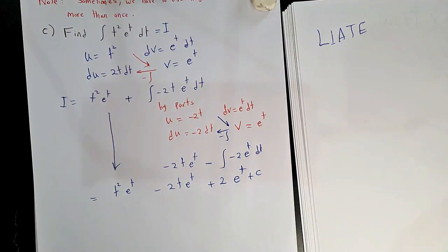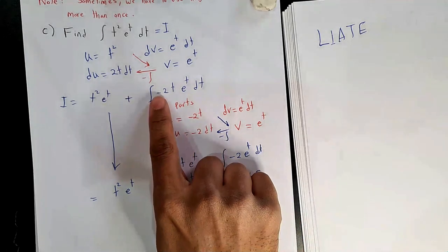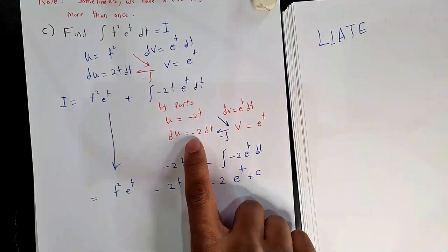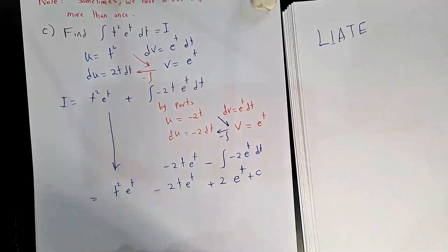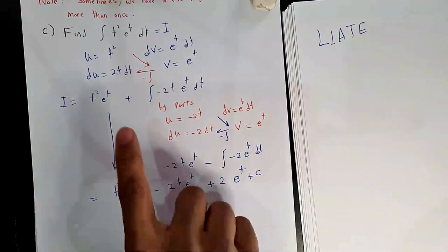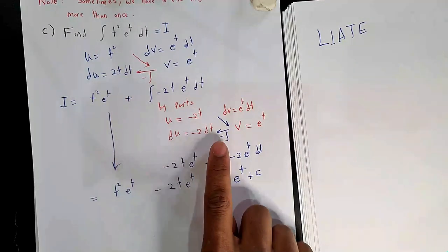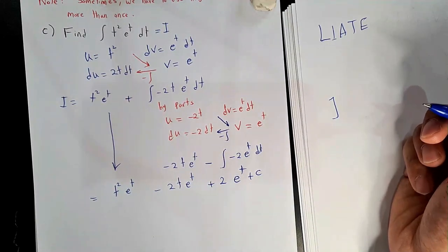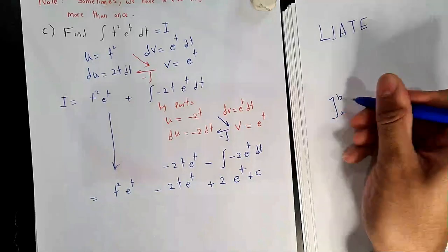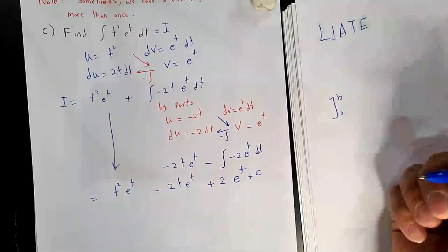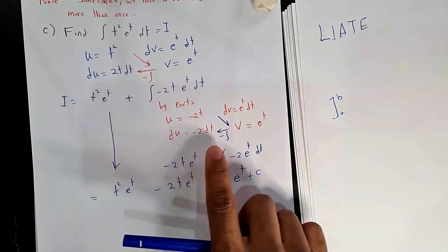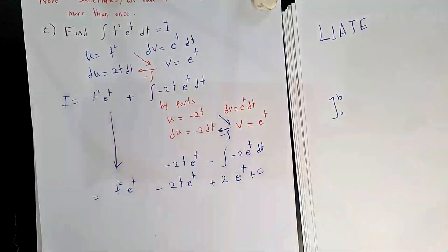A student asked: why remove the minus? When we do integration by parts a second time, we can have multiple minus signs — one outside, one from the integration, and possibly one more for definite integrals. Putting the minus inside early helps avoid missing signs. If you leave it outside, you must multiply everything inside by that minus.